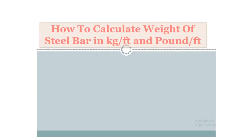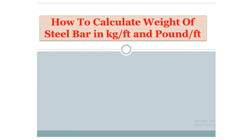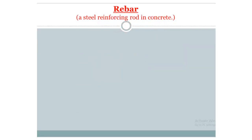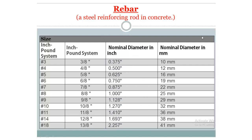In this video I am talking about how to calculate the weight of a steel bar. I am showing some important information on screen. First, showing in the pound system: there are 3-bar, 4-bar, 5-bar. The second column shows the pound system with details, and the third column shows the fraction below for nominal diameter in inches.